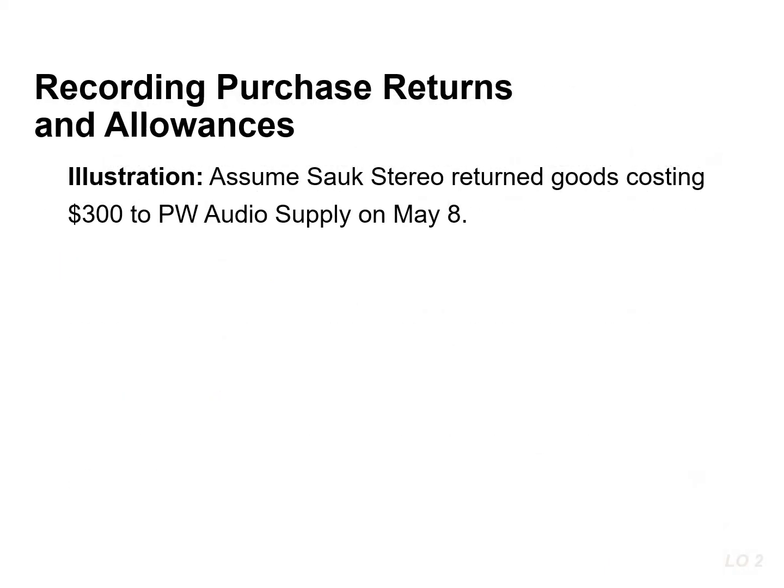Let's assume that Sock Stereo returned goods costing $300 to PW Audio Supply on May 8th. Sock Stereo would record the following entry: debit or decrease accounts payable for $300 and credit or decrease inventory for $300. Because Sock Stereo increased inventory when the goods were received, inventory is decreased or credited when the business returns the goods. If Sock Stereo chose to keep the goods after being granted a $50 allowance, it would simply reduce or debit accounts payable and reduce or credit inventory for $50.